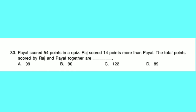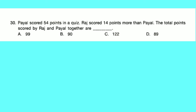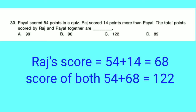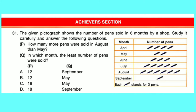Question number 30: Payal scored 54 points in a quiz. Raj scored 14 points more than Payal. The total points scored by Raj and Payal together are dash. Raj's score: 54 plus 14 equals 68. Total: 54 plus 68 equals 122. Option C is correct.